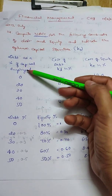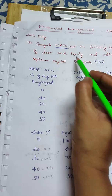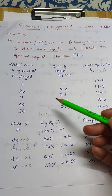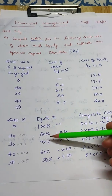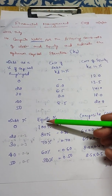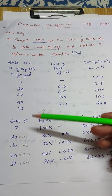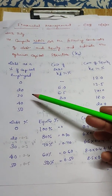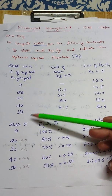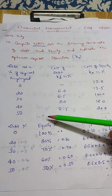We'll compute the WACC by finding the cost of capital multiplied by the proportion of that capital. Debt as a percentage of capital employed: when debt is 0%, equity is 100%. When debt is 20%, equity is 80%. When debt is 30%, equity is 70%. When debt is 40%, equity is 60%. When debt is 50%, equity is 50%. This is the debt and equity mix.